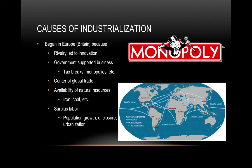Their governments support business, unlike what we see in some other regions like China, where business isn't the most important thing and more it's about farmers. To support businesses, they give them tax breaks and allow for monopolies, like with the East India companies. And then you have Europe becoming a center for global trade.